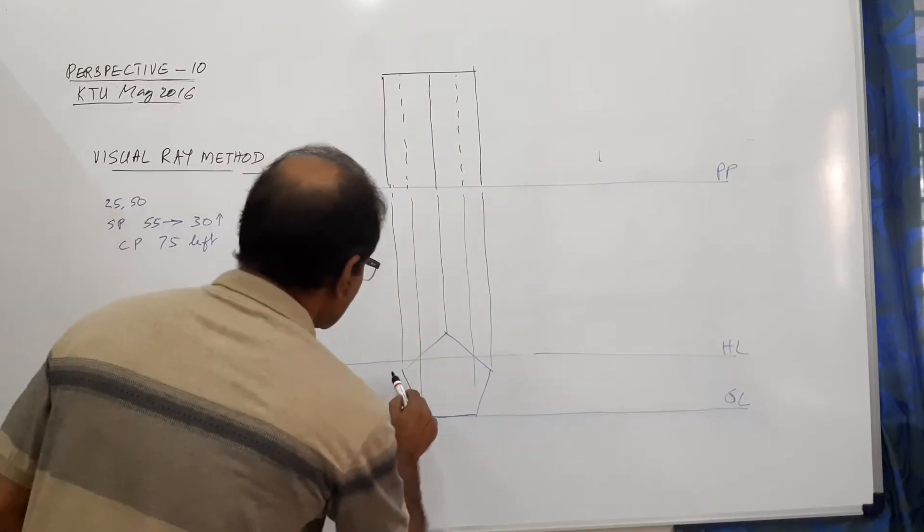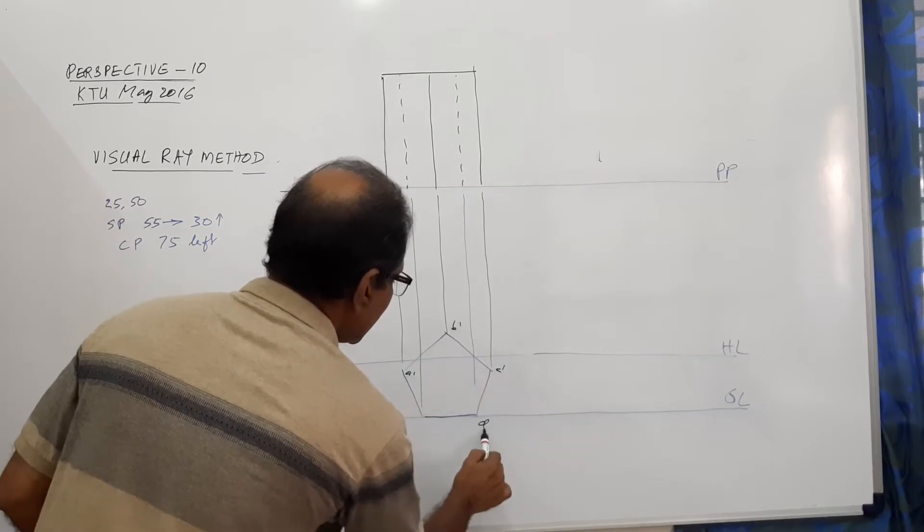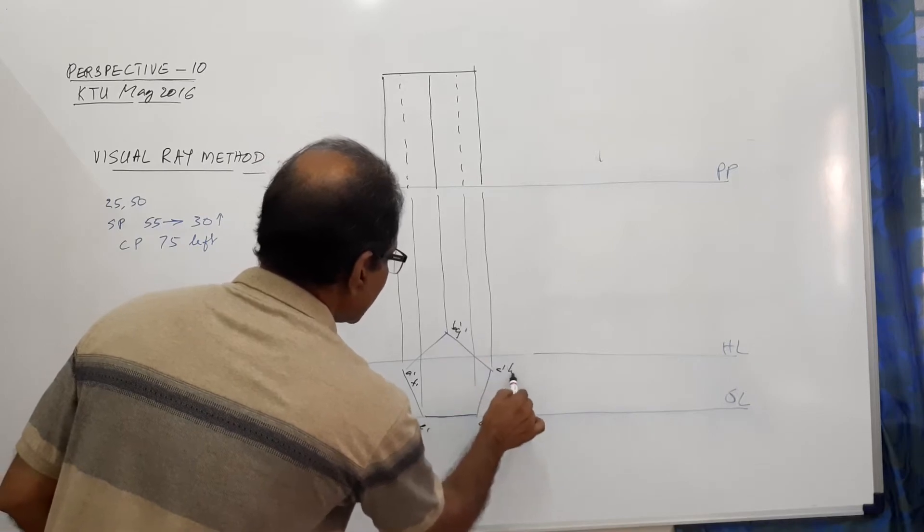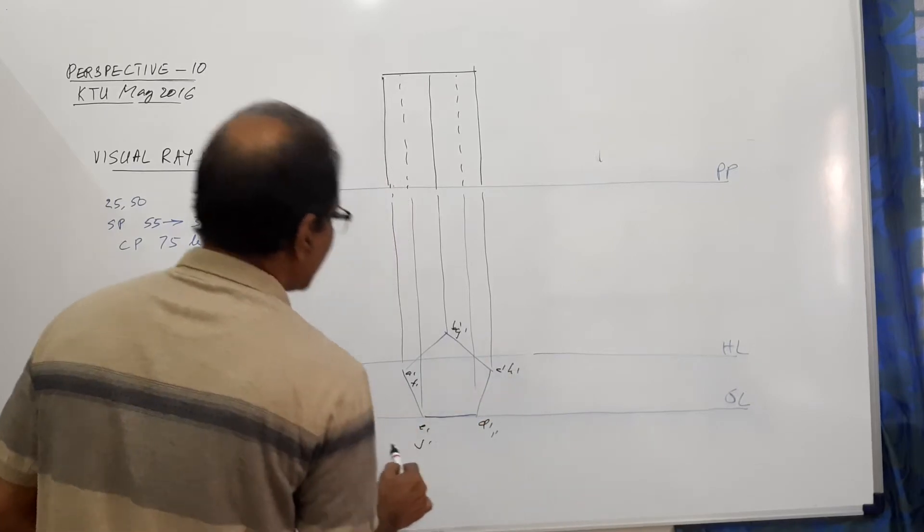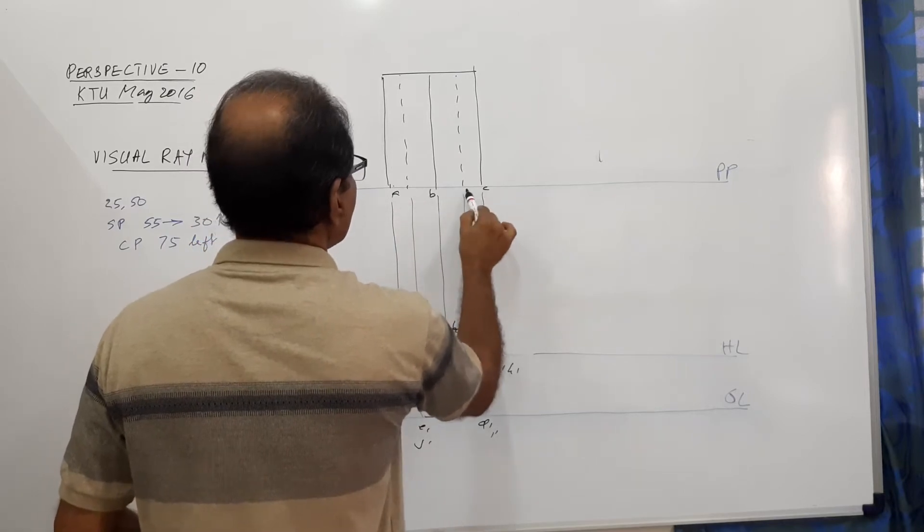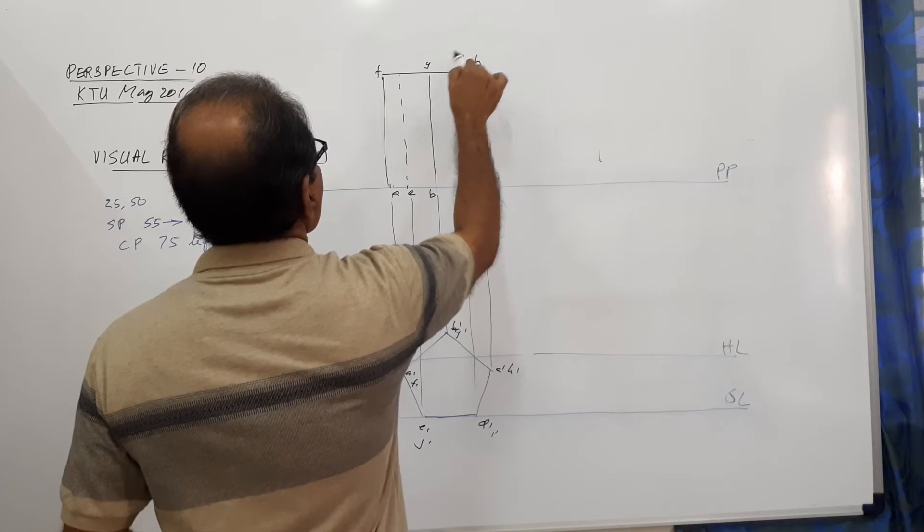I call this A dash, B dash, C dash, D dash, E dash, F dash, G dash, H dash, I dash, J dash. And this is A, B, C, D, E, F, G, H, I, J.